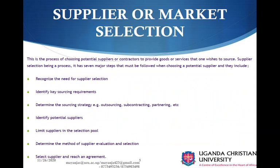We go to the next section, which is supplier or market selection. Supplier selection can be the same as market selection. The selection process is a process of choosing potential suppliers or contractors to provide goods or services that one wishes to source. Being a process, supplier selection has seven major steps that must be followed when choosing potential suppliers. Number one: recognize the need for supplier selection.